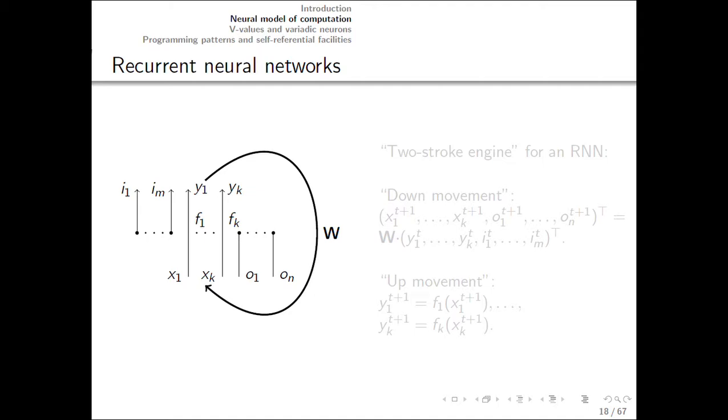Now we're going to talk about neural models of computation. The essence of neural models is that linear and nonlinear transformations of data are interleaved. For example, the recurrent neural network is an engine with a two-stroke cycle repeated indefinitely. On the down movement, linear transformation happens using the network matrix W. And on the up movement, neuron activation functions apply generally nonlinear transformations to the inputs of the neurons. One gets the ability to flexibly control the network by only changing its linear part, the matrix, while keeping the nonlinear part fixed. The presence of the nonlinear part provides the expressive power. This is the model we use for dataflow matrix machines as well.